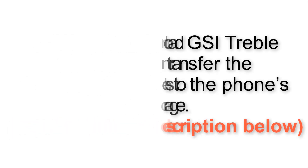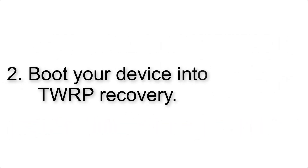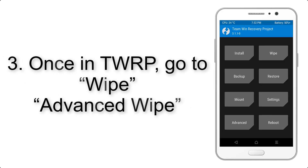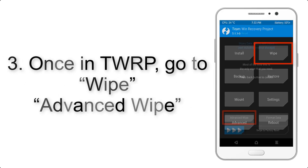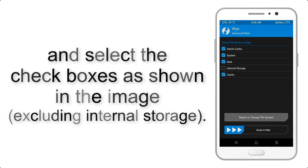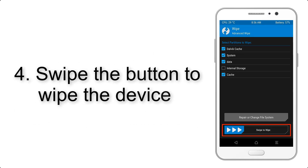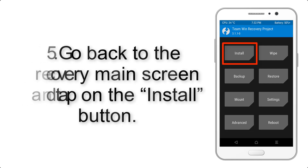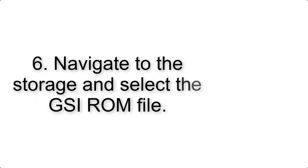Step 3: Boot your device into TWRP recovery. Once in TWRP, click on Wipe, then Advanced Wipe, and select the checkboxes as shown in the image, excluding internal storage. Step 4: Swipe the button to wipe the device. Step 5: Go back to the recovery main screen and tap on the Install button.